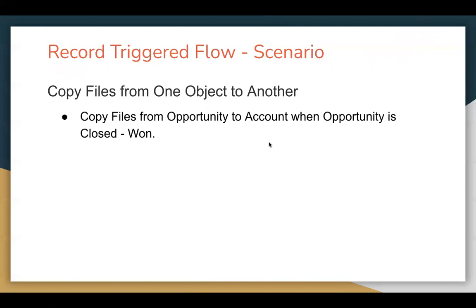Let's understand the requirement of Record Trigger Flow. The requirement is that we need to copy files from one object to another. The use case says you need to copy files from Opportunity to Account when the Opportunity is closed-won. So we have one Account record which can have one related Opportunity, and that related Opportunity will have one or more files related to it. If the Opportunity is closed-won, you need to copy all those files which are related to the Opportunity to the Account.